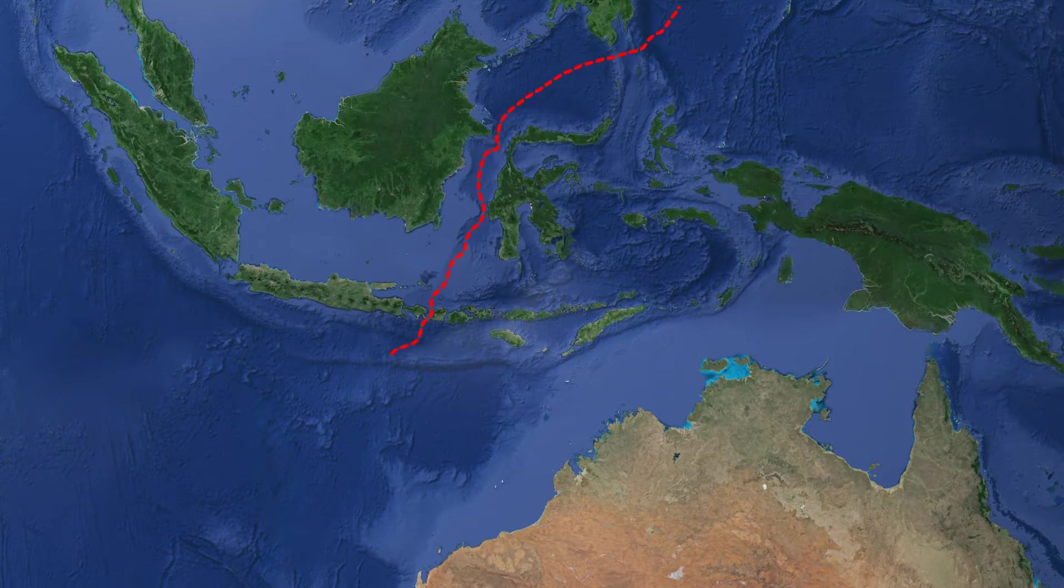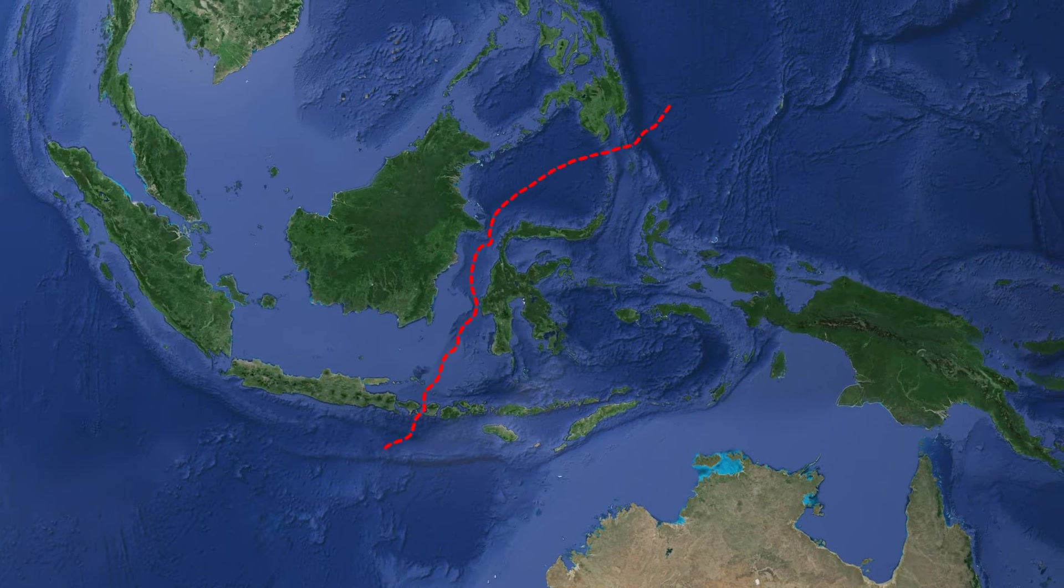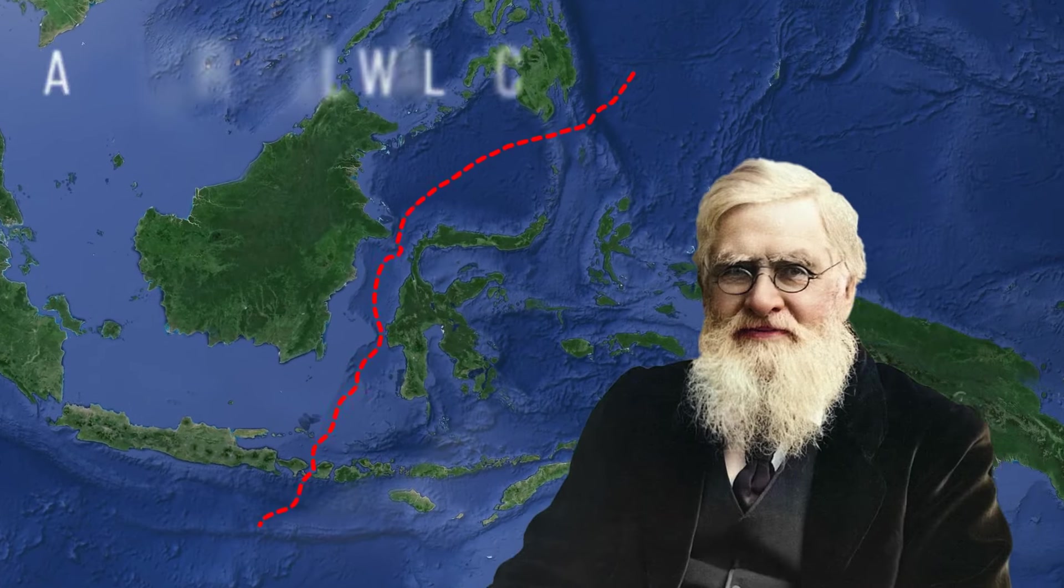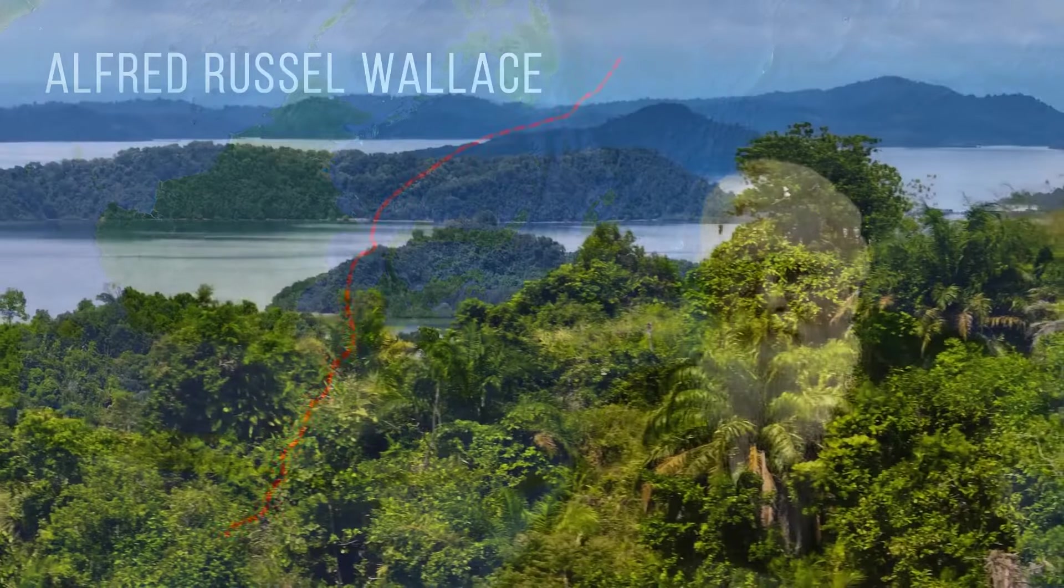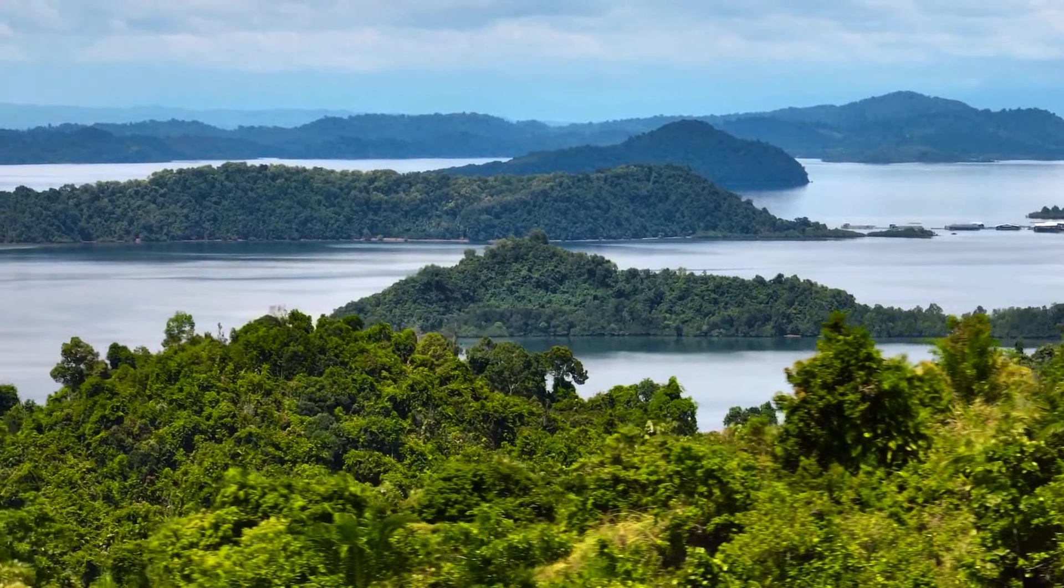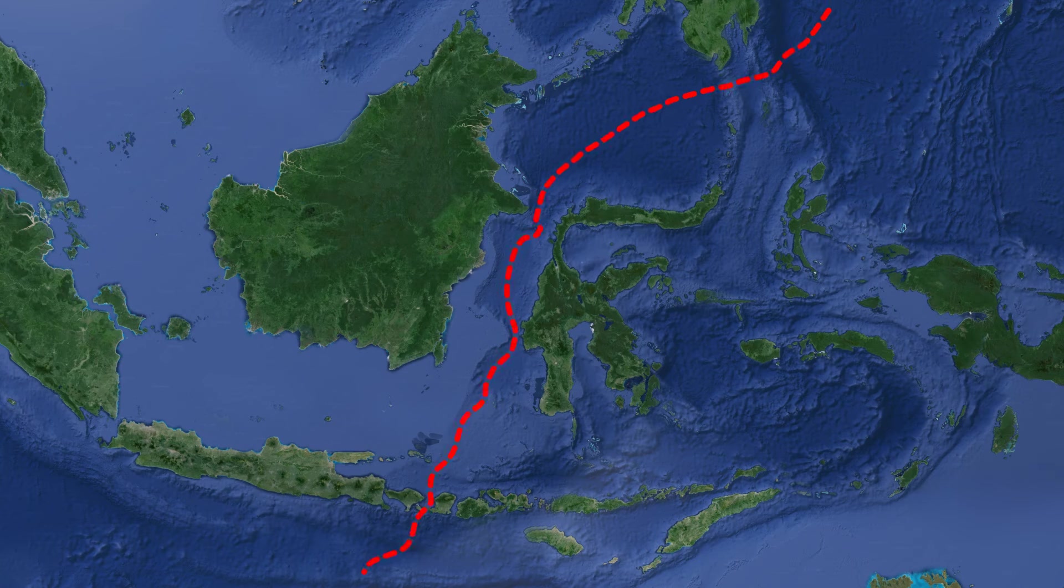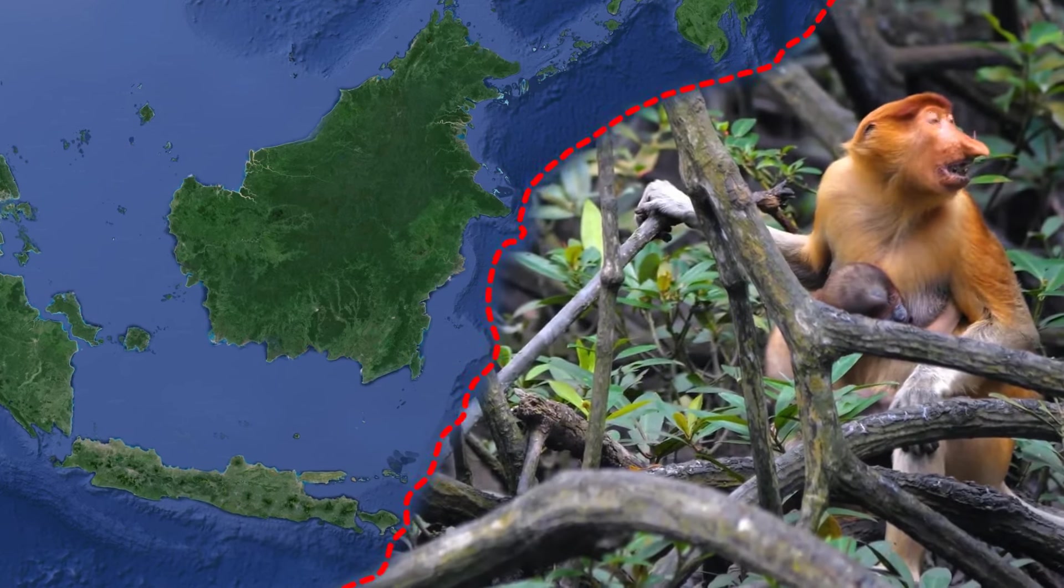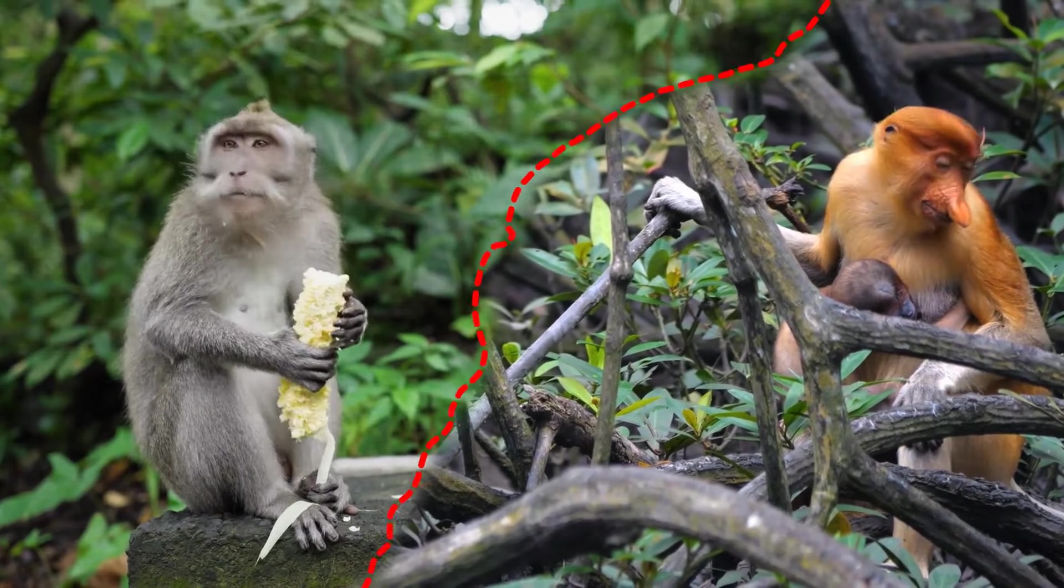For instance, the mystery behind this invisible species line in Indonesia. It's called the Wallace Line, named after the British explorer Alfred Russell Wallace. Over 150 years ago, Wallace was on a journey around the Malay Archipelago, visiting thousands of islands. What he found was that animals on one side of this invisible line were considerably different from ones on the other side.